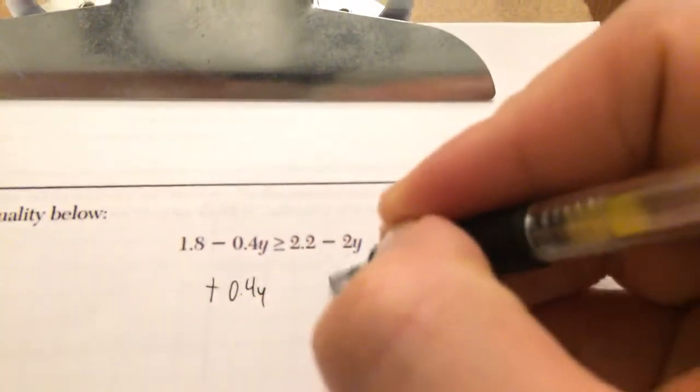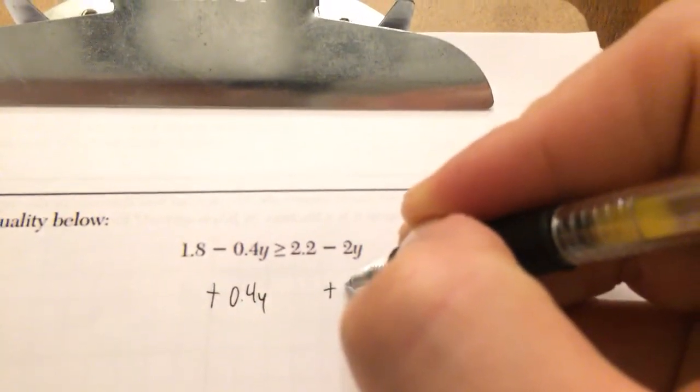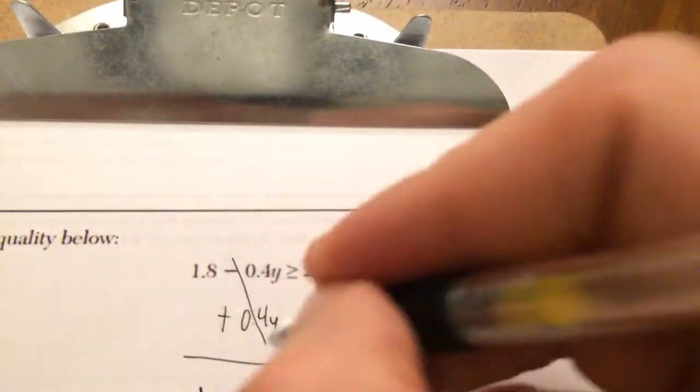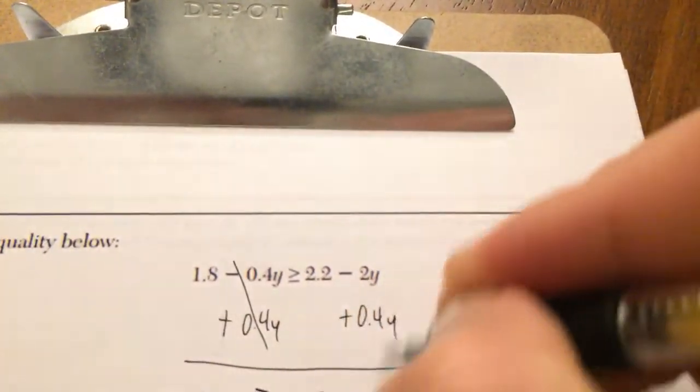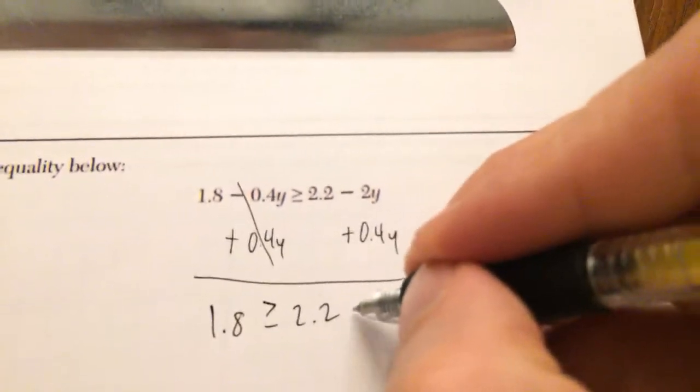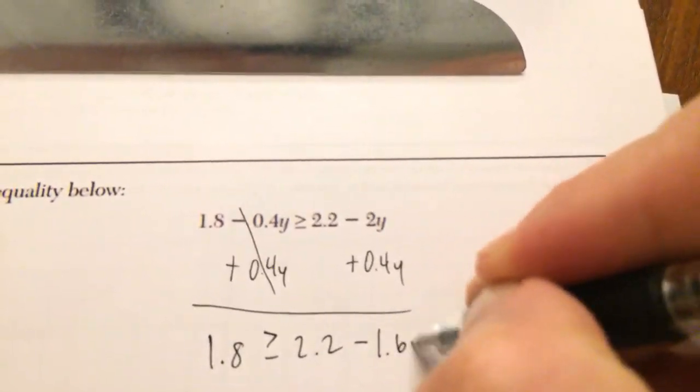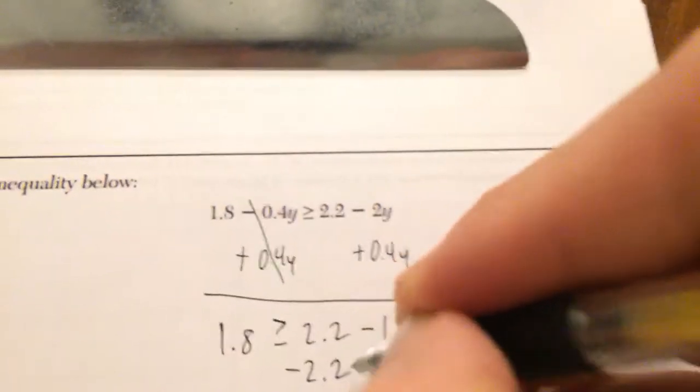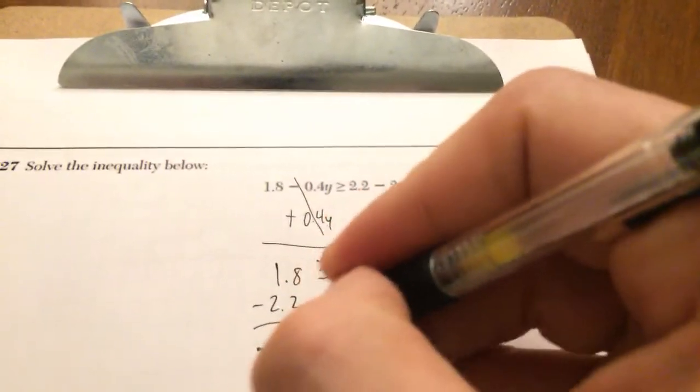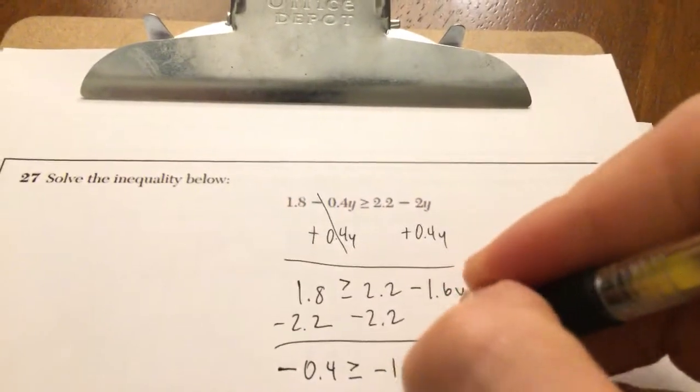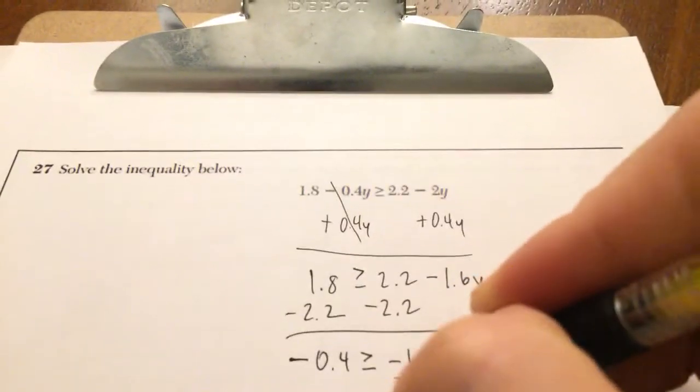Number 27, I'm going to solve by adding 0.4y. I should have moved the other one, but that's okay. 1.8 is greater than or equal to 2.2. And then what I have here is minus 1.6y. If I subtract 2.2, subtract 2.2, I get negative 0.4 is greater than or equal to negative 1.6y.